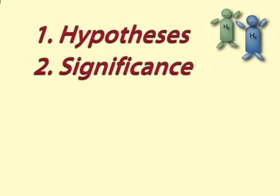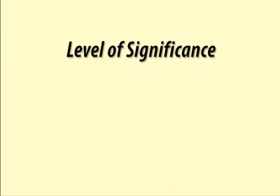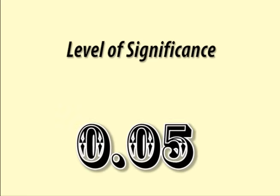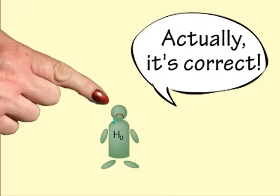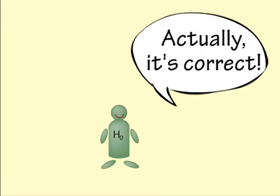Step 2: Significance. Decide on the level of significance. Unless there is a good reason not to, people generally use 0.05 as a significance level, also known as the alpha value. The significance level is the probability that you will say that the null hypothesis is wrong when really it is correct. This is known as a type 1 error.